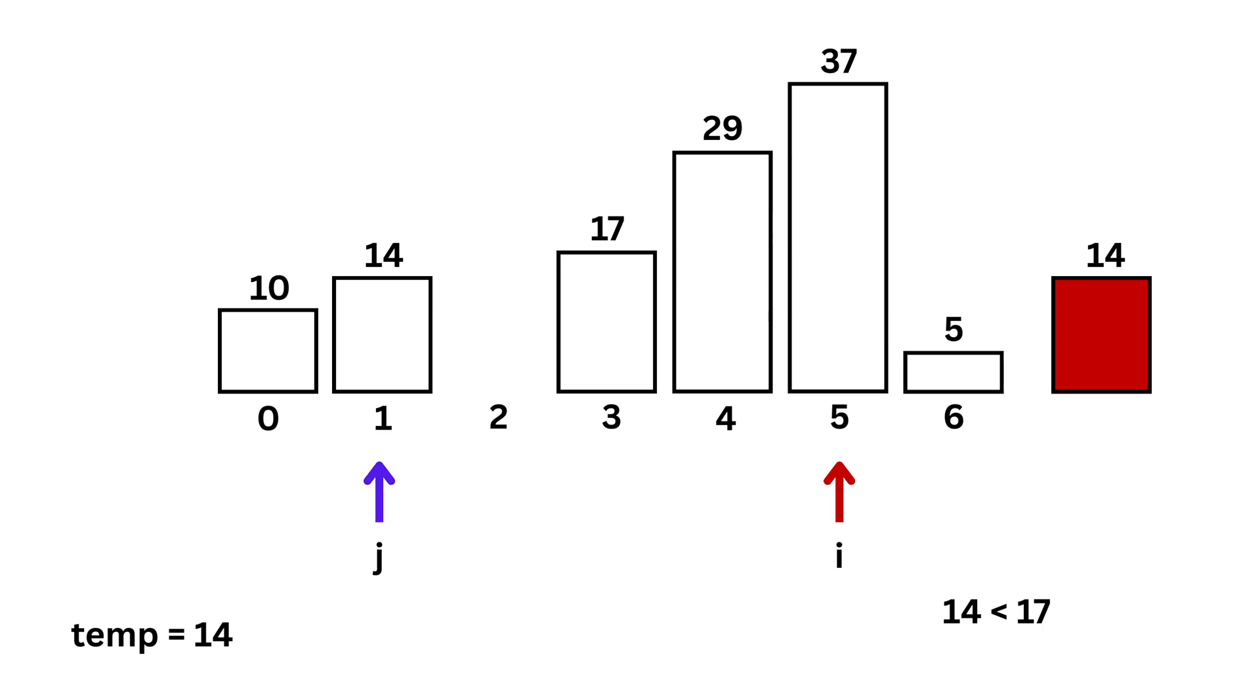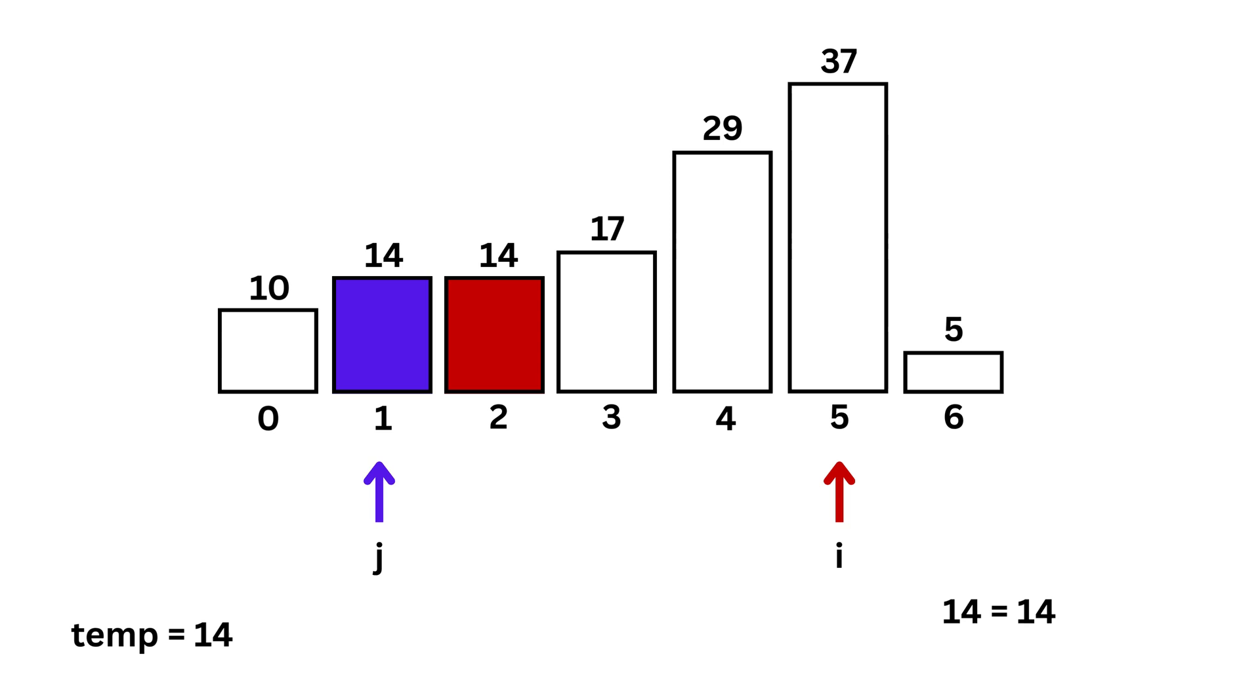Then, j becomes 1, pointing to 14. Since both the values at j and temp are equal to 14, we stop. So, insert temp just after that.